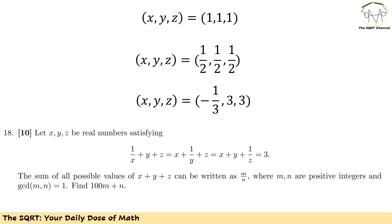There is something interesting here. We have symmetry in these equations, so if we have negative 1/3, 3, and 3 for x, y, z it's possible to have other cases where we just swap the values of x, y, and z. However, we are interested in the sum of all possible values of x plus y plus z, not individual values.